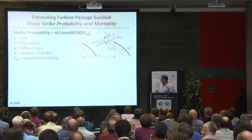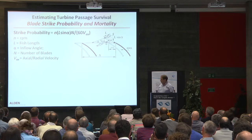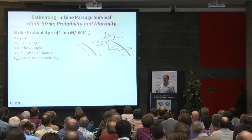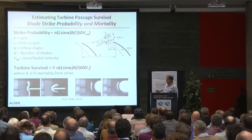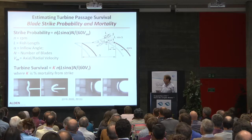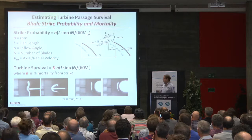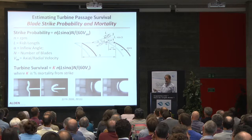Now, how do we predict or estimate blade strike using a theoretical model? This model has been around for many years with slightly different versions used by different groups. It's the probability of strike — the probability that a fish of a given length can get between two blades in the time the blades move the distance between each other. To make it a turbine survival estimate, we add K, which is based on the strike mortality data I just showed you — taking mortality data for different strike velocities, different blade thicknesses, and fish lengths and applying it to specific turbines. We've used that at many projects in the U.S. and also at a project in Estonia.